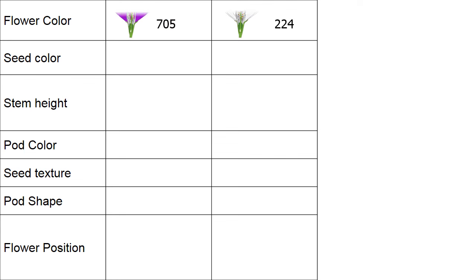Mendel examined all seven traits. For flower color, he counted 705 plants with purple flowers and 224 with white flowers — a three to one ratio. For seed color, he counted 6022 plants with yellow seeds and 2001 with green seeds — again a three to one ratio.